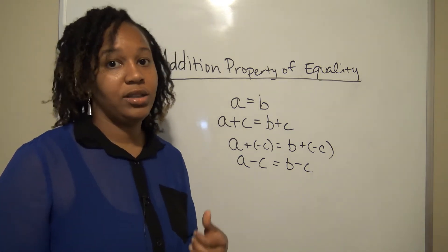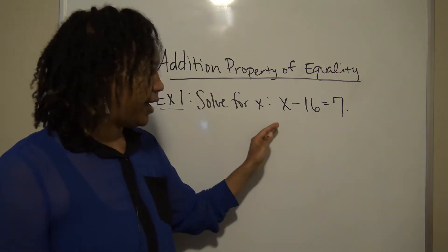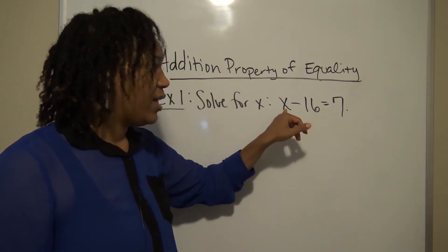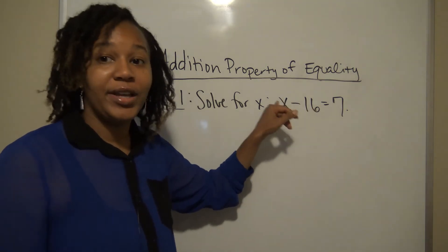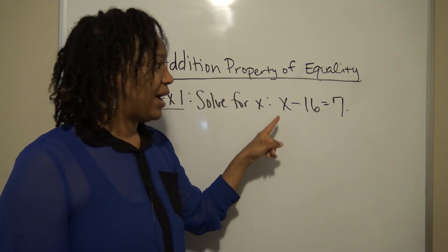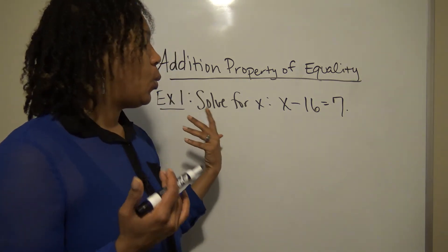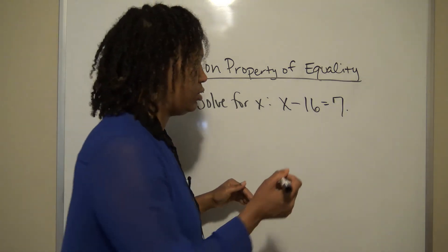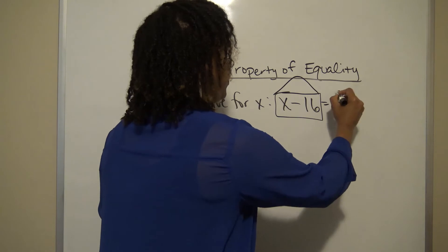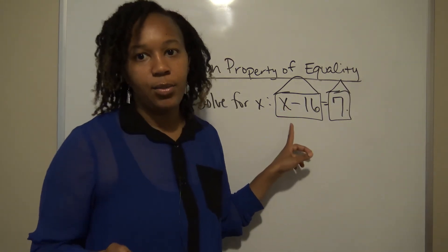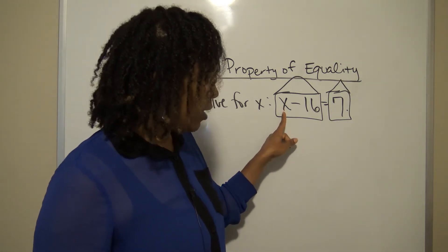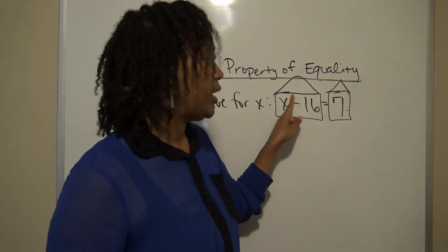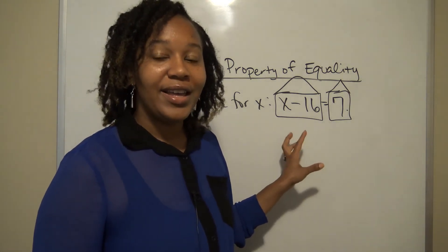Let's see how that works. We want to solve x - 16 = 7. It's an equation because there's an equal sign, it's linear because the highest exponent on x is 1, so we can use the addition property. A helpful analogy: think of both sides of the equation as a house, think of yourself as the variable, and the goal is to be home alone. Right now, minus 16 is in the house with me, so I want to get rid of it.